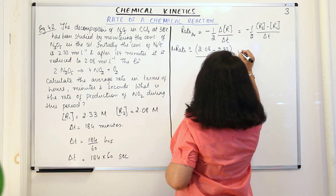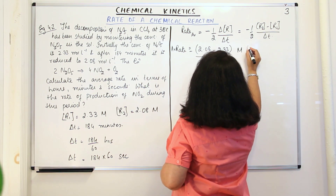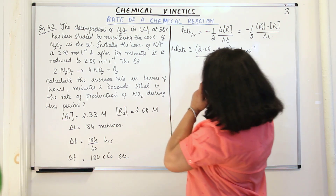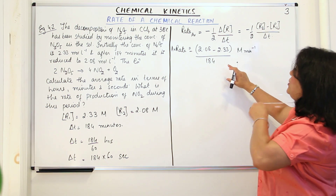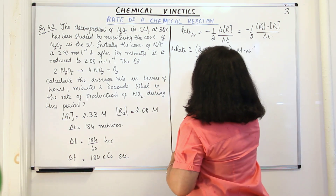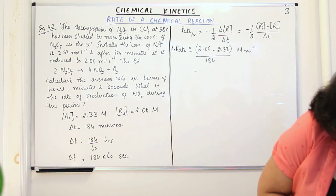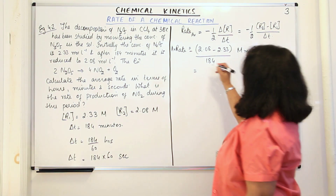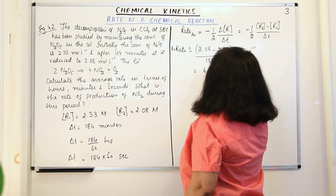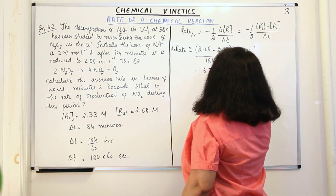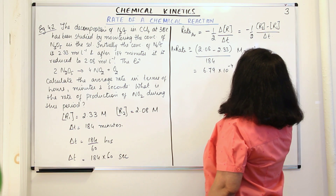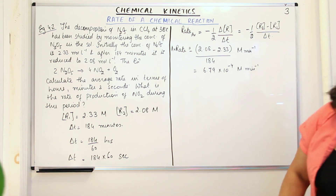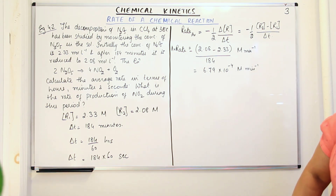When you solve this, the units are moles per liter per minute because the unit of time is in minutes. The result is 6.79 × 10⁻⁴ moles per liter per minute.